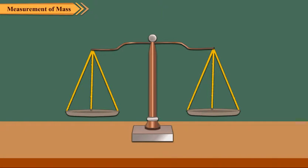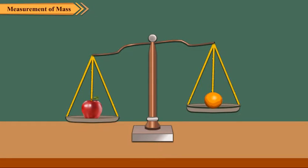We generally use a beam balance to weigh things. A beam balance has two pans which remain in the same level. When we weigh, the pan containing heavier objects goes down and the pan containing the lighter object goes up.